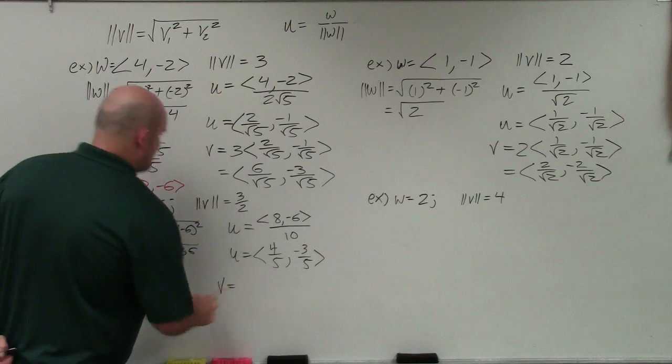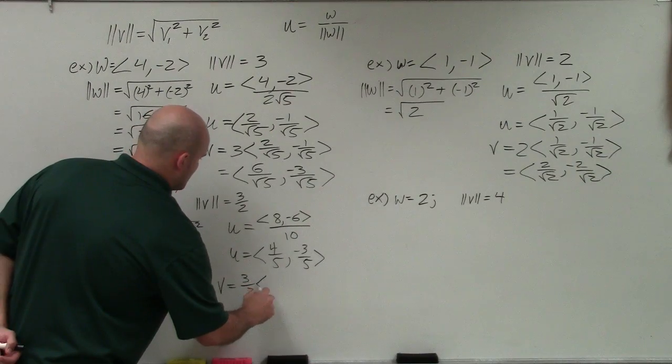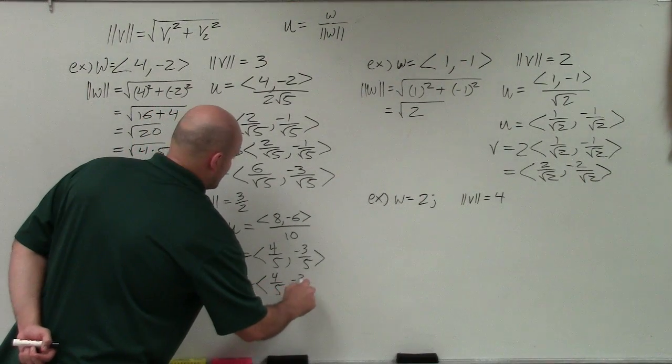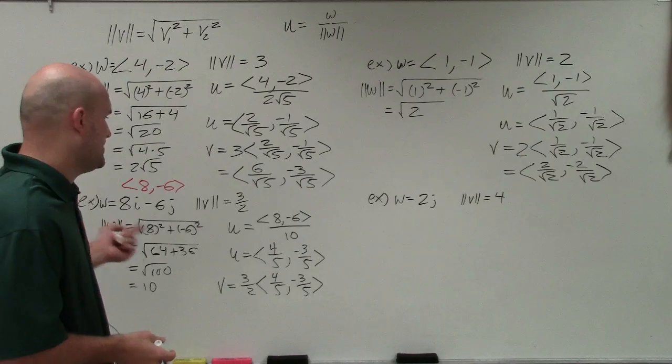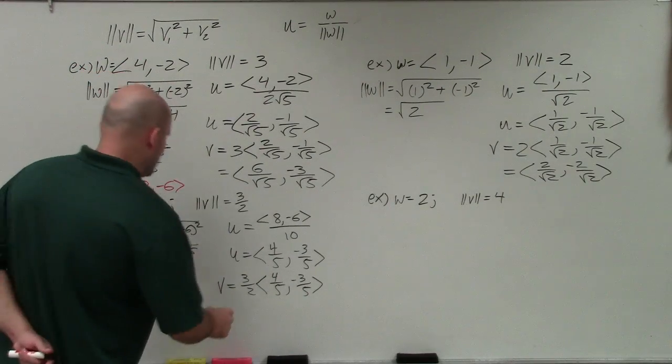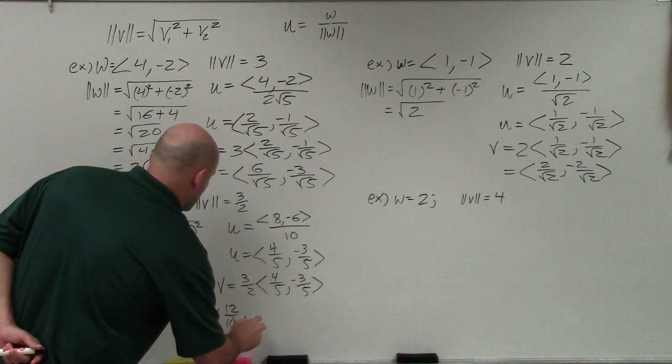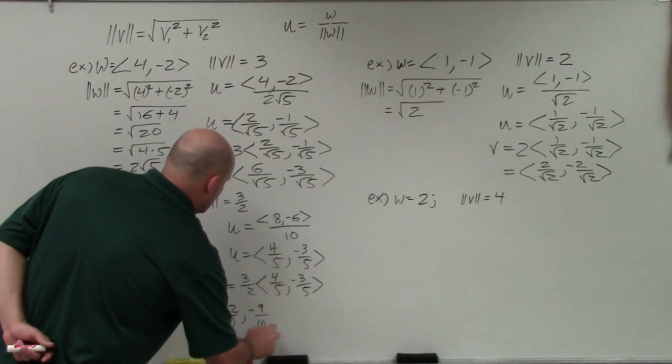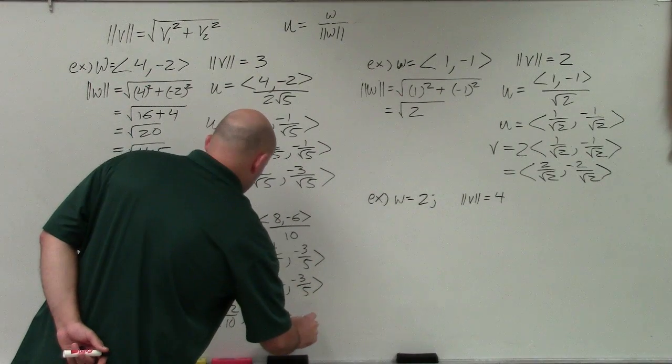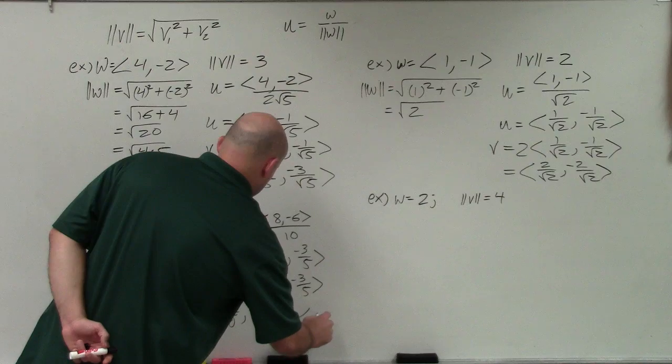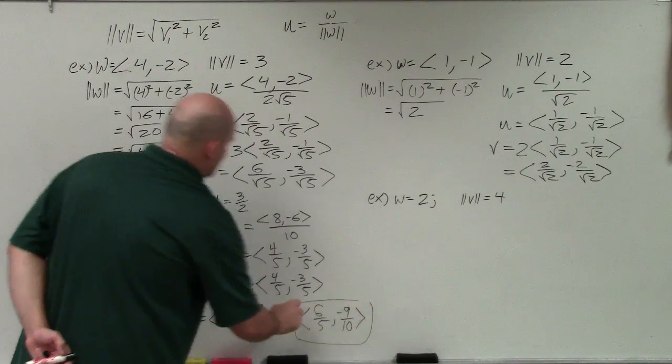Now to find my vector v, I'm basically just going to be multiplying that by my new scalar, which is 3 halves. And just remember now, scalar is a fraction, but that's OK. Remember when you're multiplying fractions, multiply numerator times numerator, denominator times denominator. And I get 12 over 10 comma negative 9 over 10. And I can simplify the top to give me 6 fifths. So my final vector is going to be 6 fifths comma negative 9 over 10.